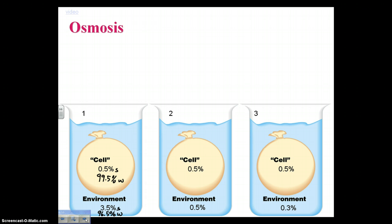Hopefully your answer is that water will actually move from within the cell to the outward environment, because we have 99.5% versus 96.5% water. Water will always move from high concentration to low concentration. The sugar in this case is impermeable to the membrane.